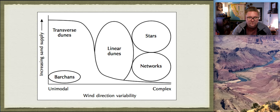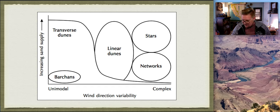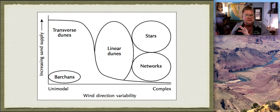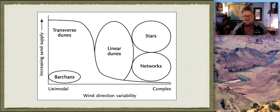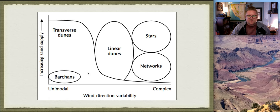Sand dunes are classified based on wind direction variability and the amount of sand available. Unimodal means one direction - imagine one person with a straw blowing sand. More complex means multiple directions. Increasing sand supply combined with wind variability transforms dune types. There are five values in the classification diagram: from barchan dunes to transverse with increasing sand on unimodal winds, and from barchan to linear with increasing wind variability.